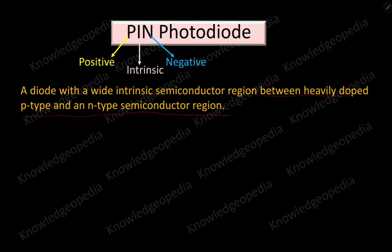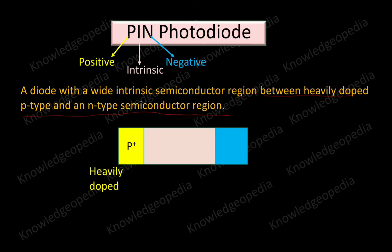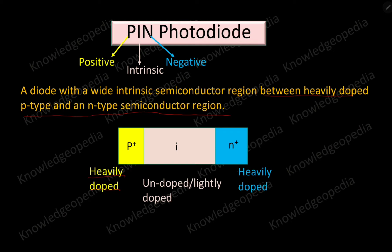A diode with a wide intrinsic semiconductor region between heavily doped P-type and N-type semiconductor regions is known as a PIN photodiode. The cross-sectional view shows three regions: the first is P-plus, which is heavily doped P-type material; the middle is intrinsic, which is undoped or very lightly doped; and the third is N-type, which is also heavily doped.